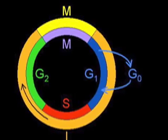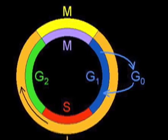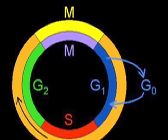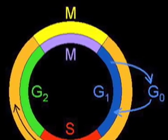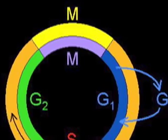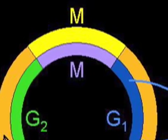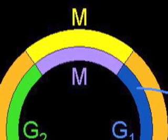The cell cycle consists of five main sections. G0, G1, S, and G2 are all part of interphase. The actual division of the cell occurs in the M phase, mitosis.